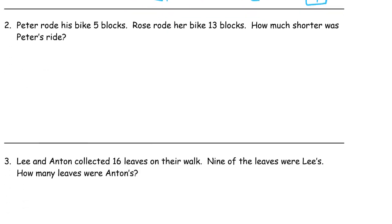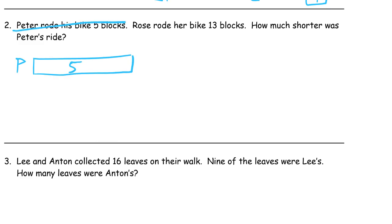Peter rode his bike five blocks. Rose rode her bike thirteen blocks. How much shorter was Peter's ride? So Peter and Rose are riding their bikes, and Rose's ride was longer, so Peter's ride was shorter, and we want to find out the difference — how much shorter was Peter's ride? Peter's five blocks — I'm just reading it and drawing it. Peter rode five blocks, there's Peter, there's five blocks.